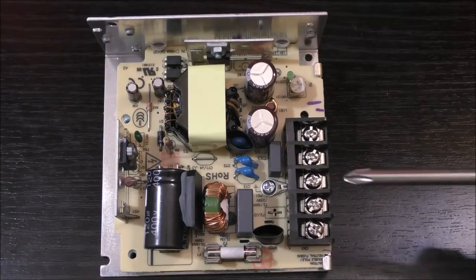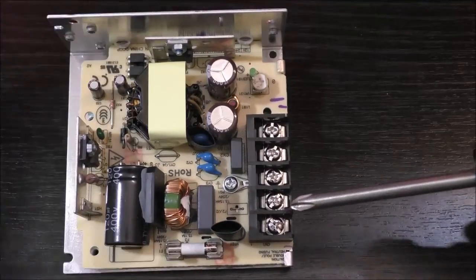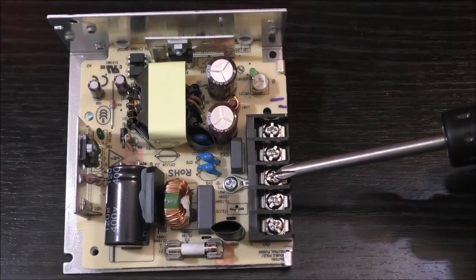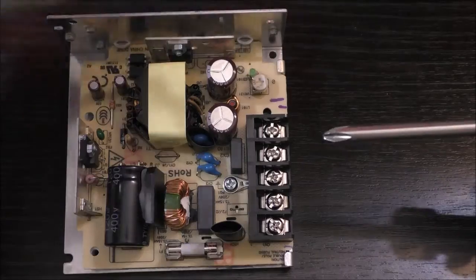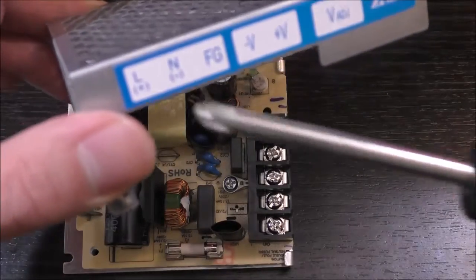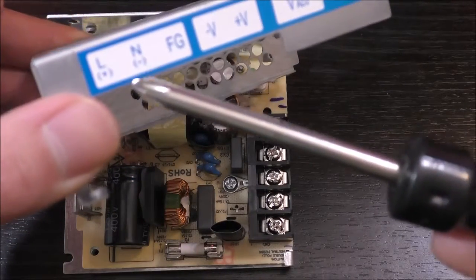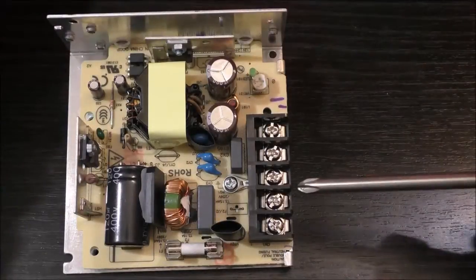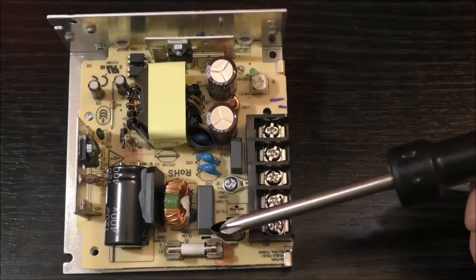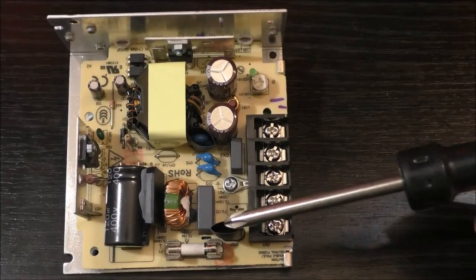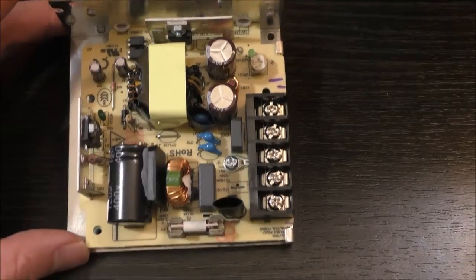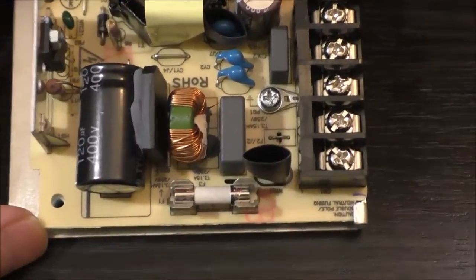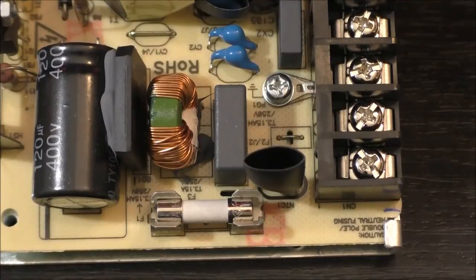First, we'll look at the main input side. So we'll have the input on this side. And as you can see, if we refer to the label at the front: live, neutral, and ground. So we have live coming in. We have an NTC for some protection. We actually have a removable fuse and that's very nice unlike the other two power supplies where the fuse was directly soldered onto the board.